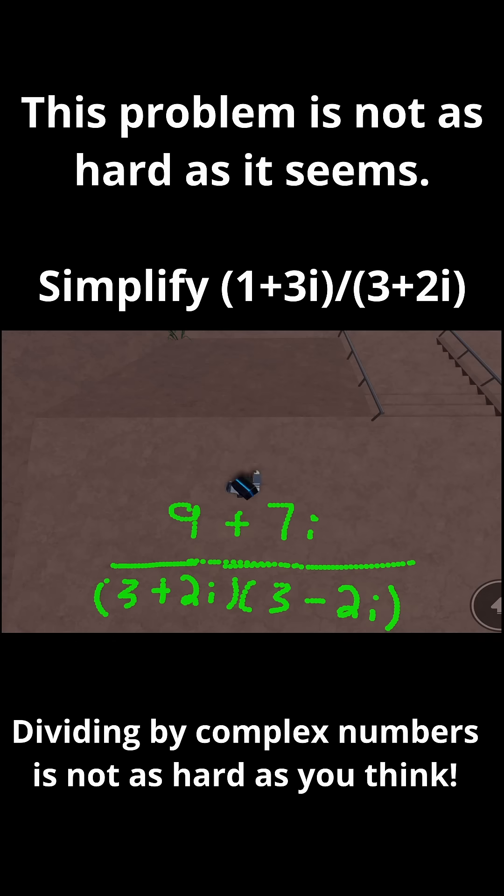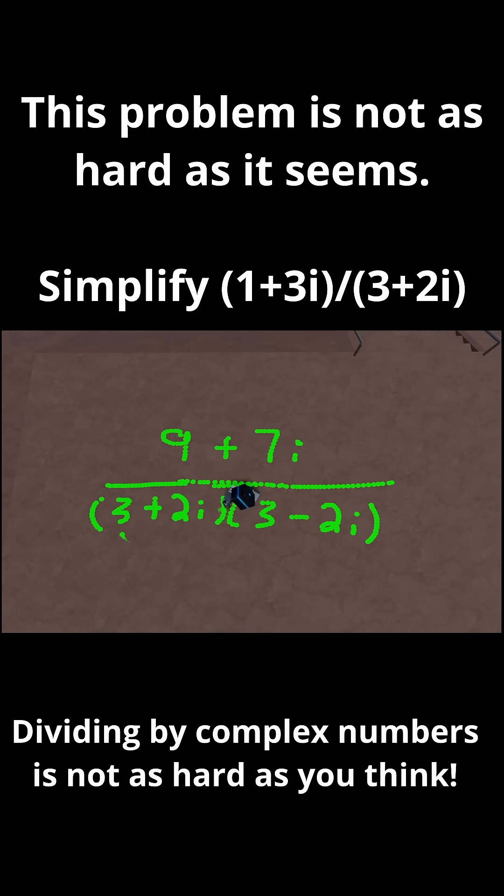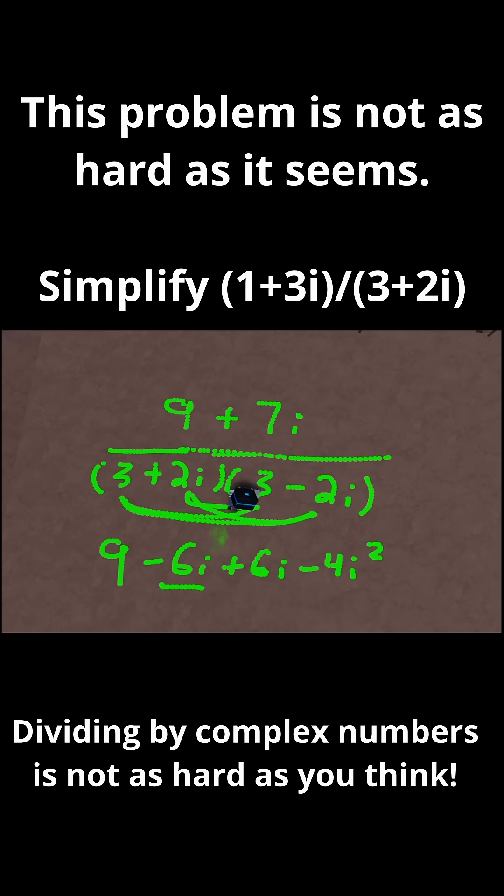Let's work on the denominator now. So first, I'm going to have 3 times 3. That's 9. And then 3 times minus 2i is minus 6i. And then I'll have 2i times 3 is plus 6i. And then 2i times minus 2i is minus 4i squared. So first off, this minus 6i and plus 6i cancel out to get 0i. So all I have is 9 minus 4i squared.